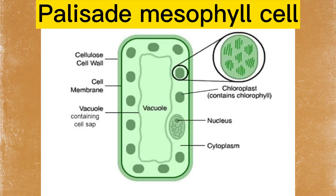All living things are made up of cells. This is what distinguishes living things from other objects. Cells are the basic building blocks of all organisms. Cells contain organelles and are the simplest level of organization. This is a palisade mesophyll cell. It is found in a leaf, and it is a photosynthetic cell that contains plenty of chloroplasts.